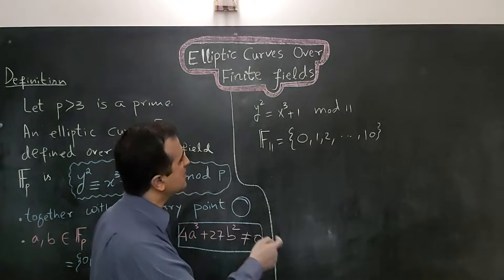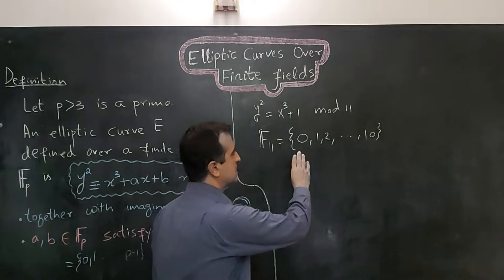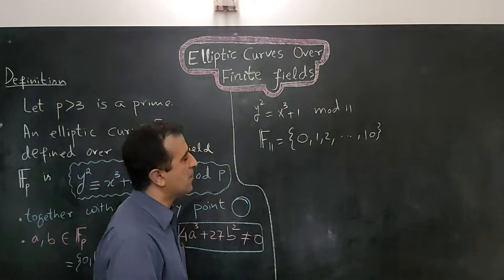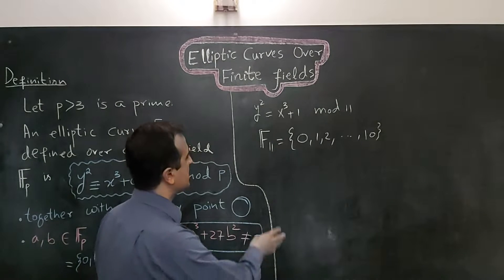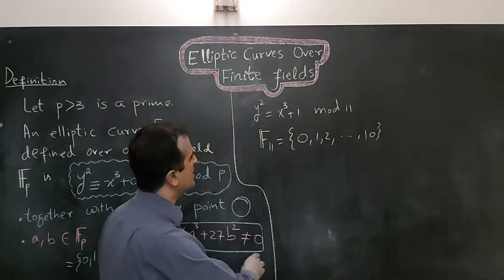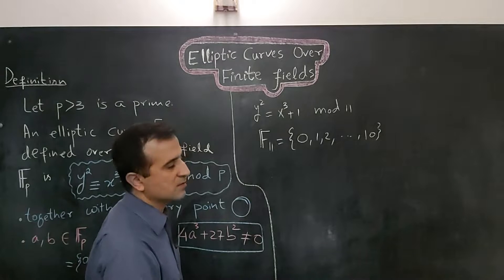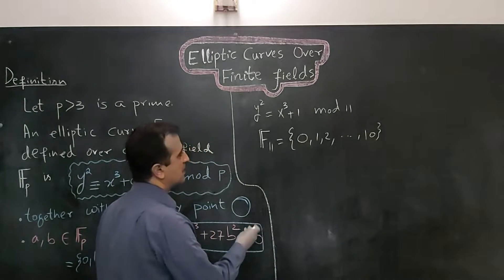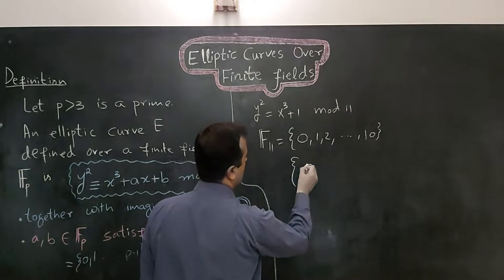If we draw this elliptic curve we have to draw it over real numbers, because if we draw it only on these finite field numbers the curve will not be properly drawn — we will only be able to draw some scattered points. When we say it is defined over this field, we mean we only consider those points on the elliptic curve whose coordinates come from this field.